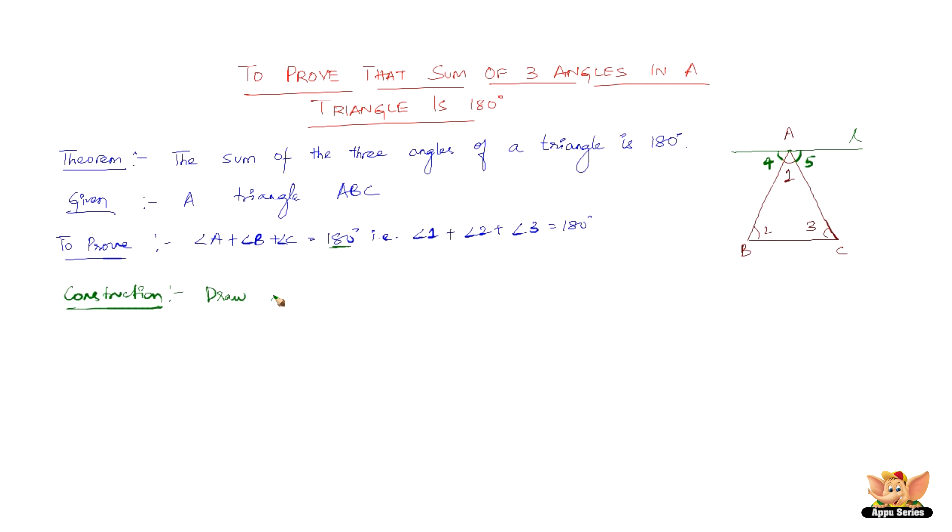Construction: Draw line L through A parallel to BC. Now for the proof. Since L is parallel to BC, we have angle 2 equal to angle 4.